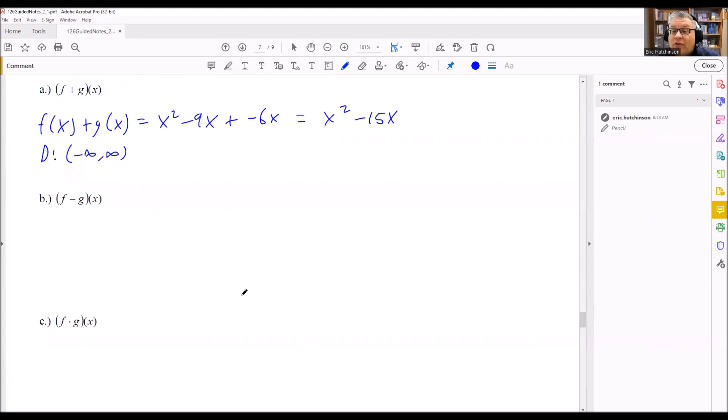All right, now part b, we have f minus g. So once again, we start with the definition. It's f of x minus g of x. So this is going to be x squared minus 9x. But now we're subtracting a negative 6x.